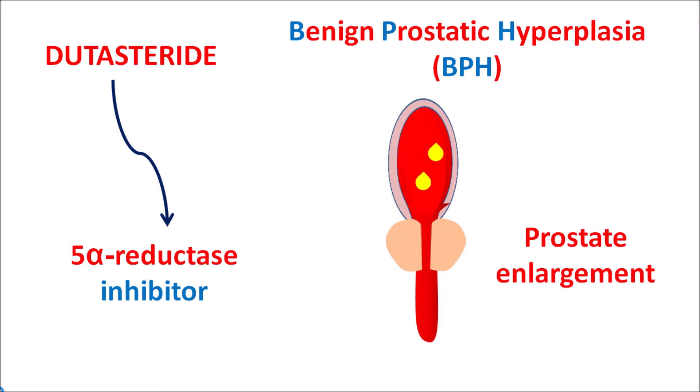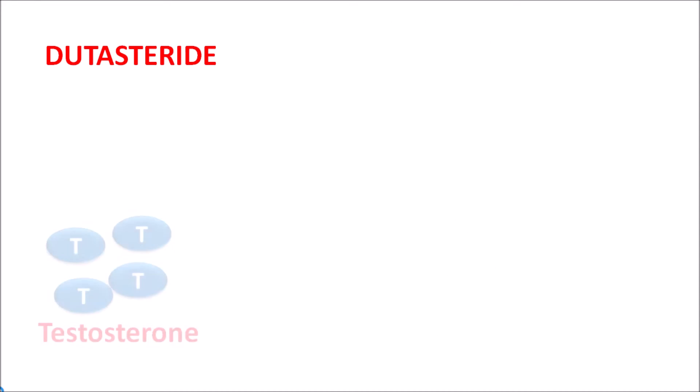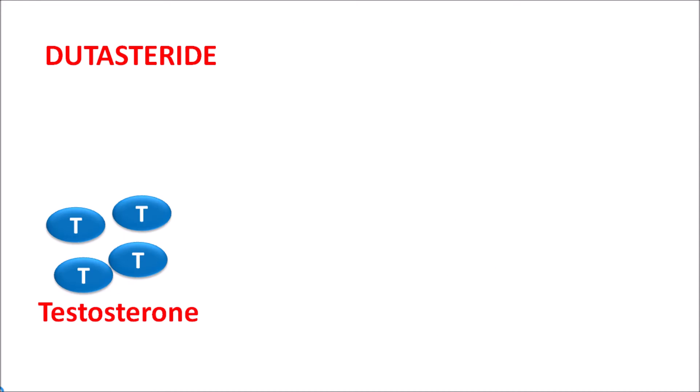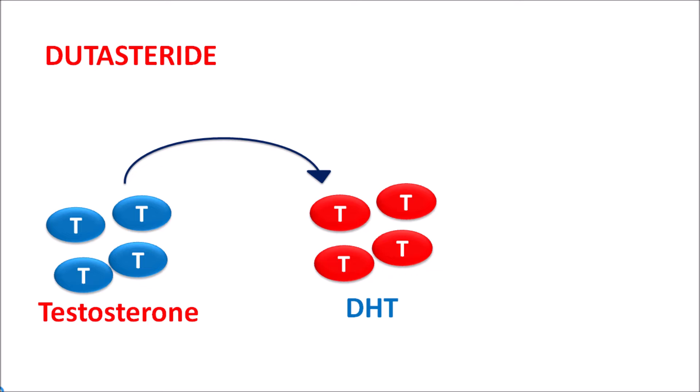In BPH, we can observe prostate enlargement. With enlargement of the prostate, the urinary flow is somewhat reduced along with increased urinary frequency. In such conditions, dutasteride can be used to reduce the prostate enlargement. Here, testosterone plays an important role in the enlargement of the prostate gland — this testosterone is not the active form.